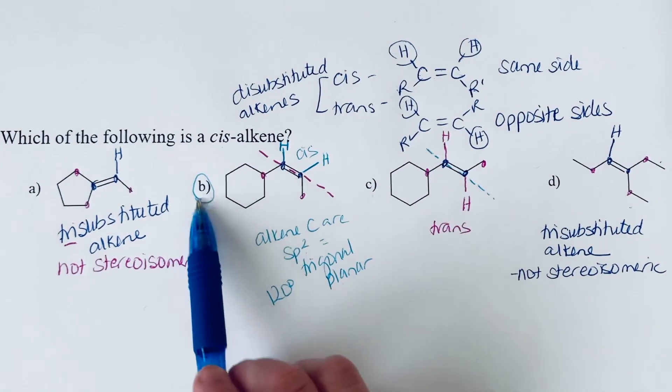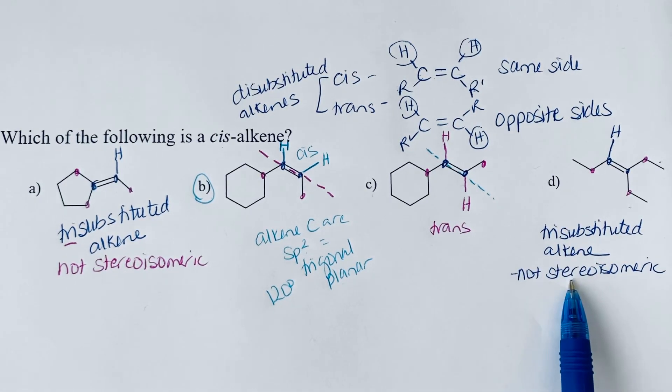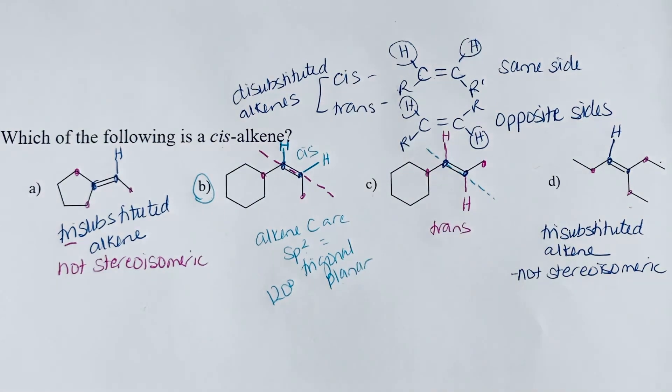So our option here is B for the cis-alkene. If you do have a tri-substituted alkene that does have stereochemistry, we simply can't use cis or trans. We need to move on to the E and Z system of alkene nomenclature.